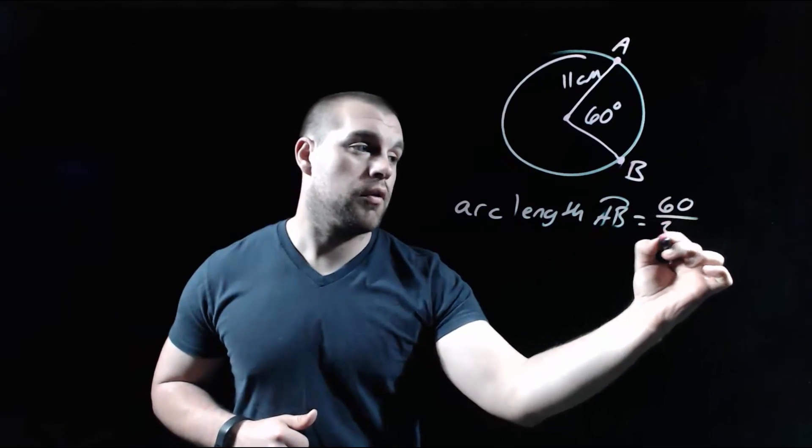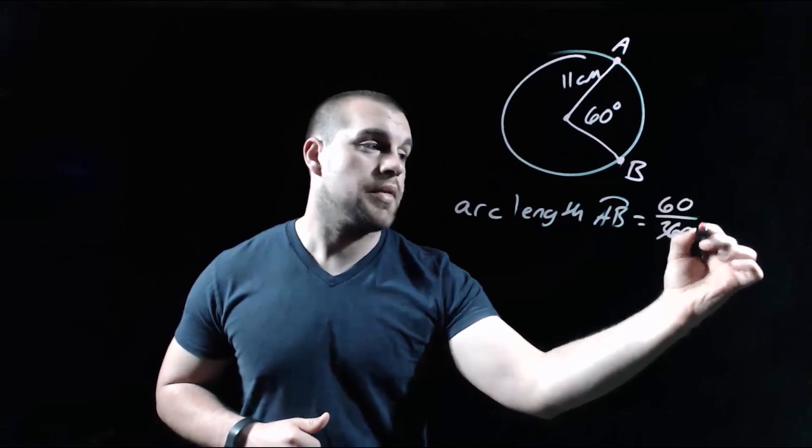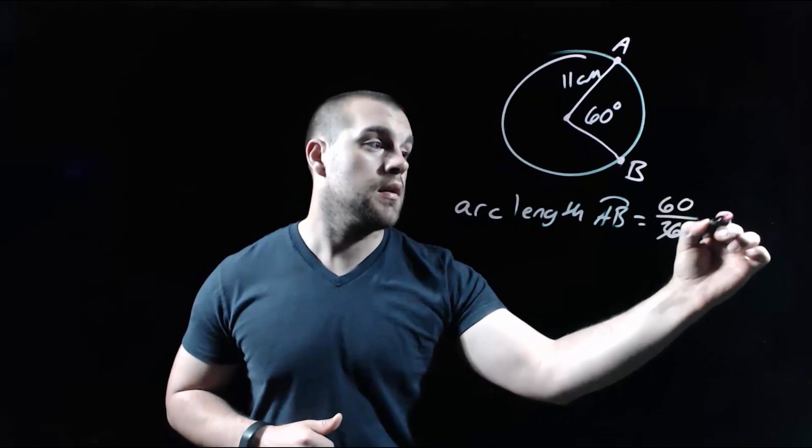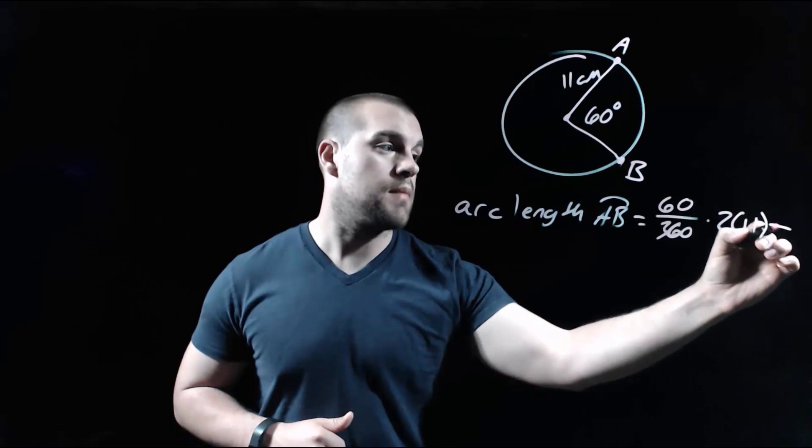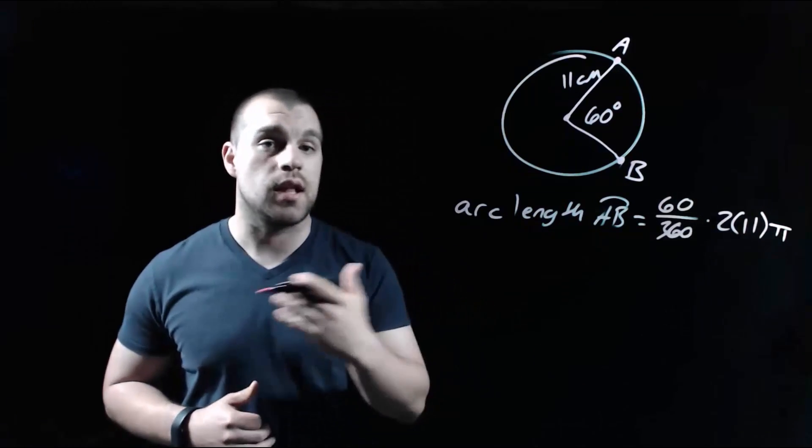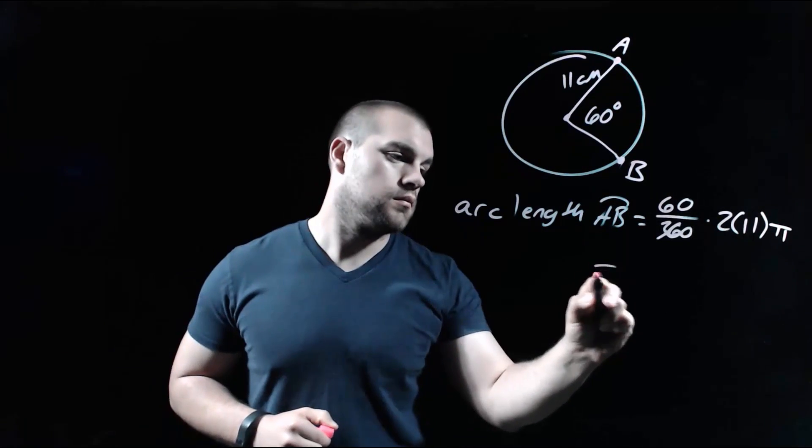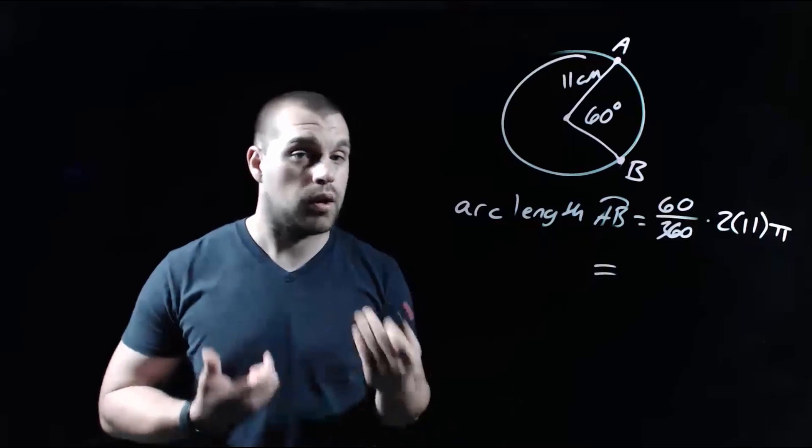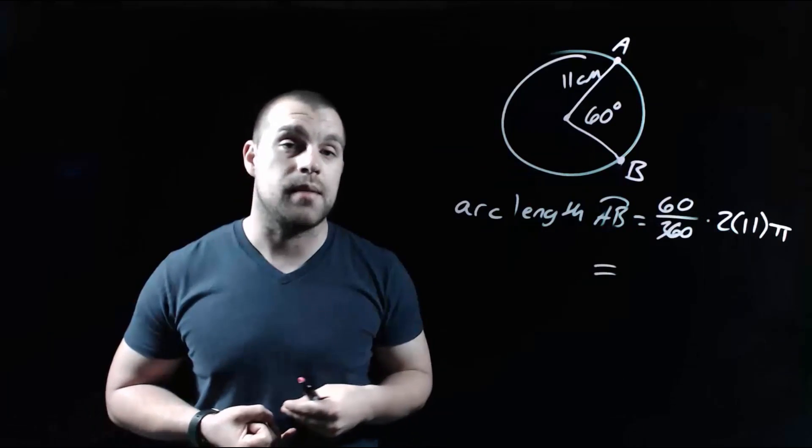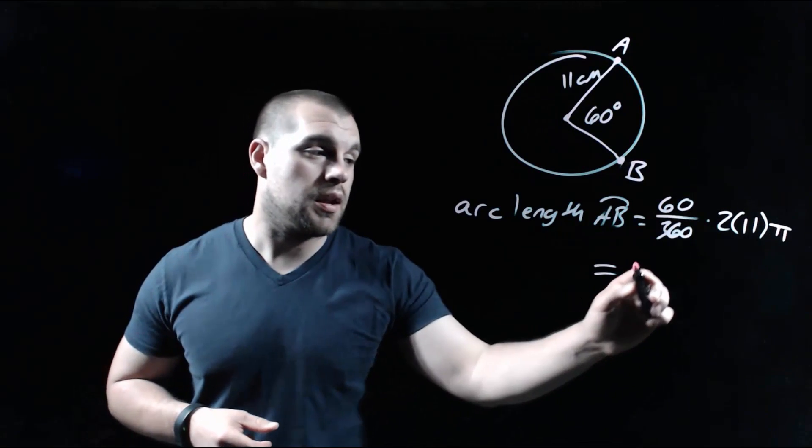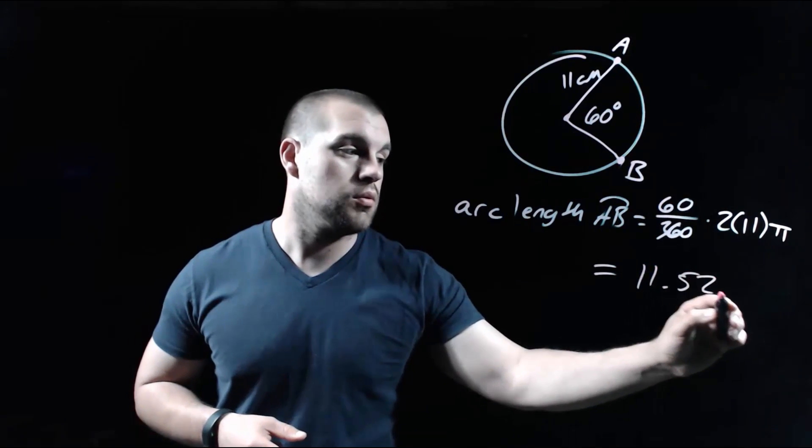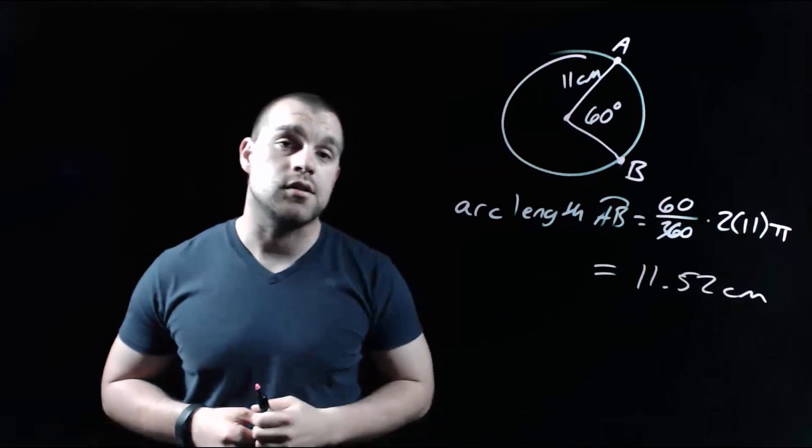So we take our 60 and put it over 360, but then we have to multiply by the circumference, which is 2 times the radius times pi. So we have 2 times 11 times pi. Now it is possible for us to just type all of this stuff into our calculator at once. 60 divided by 360 times 2 times 11 times pi. We should end up getting 11.52 centimeters as our final answer for this one.